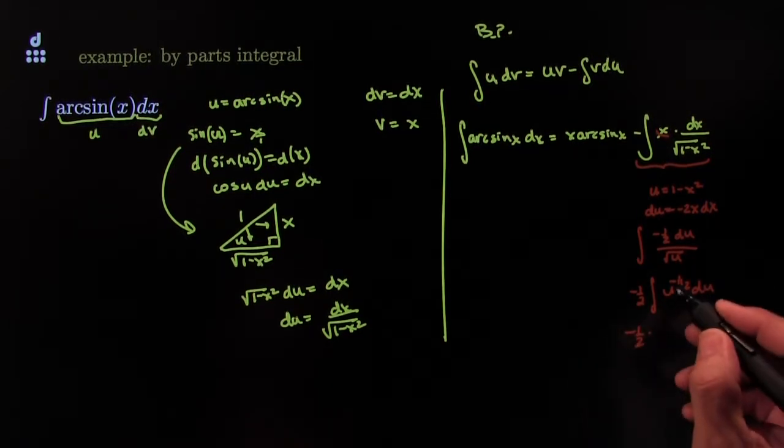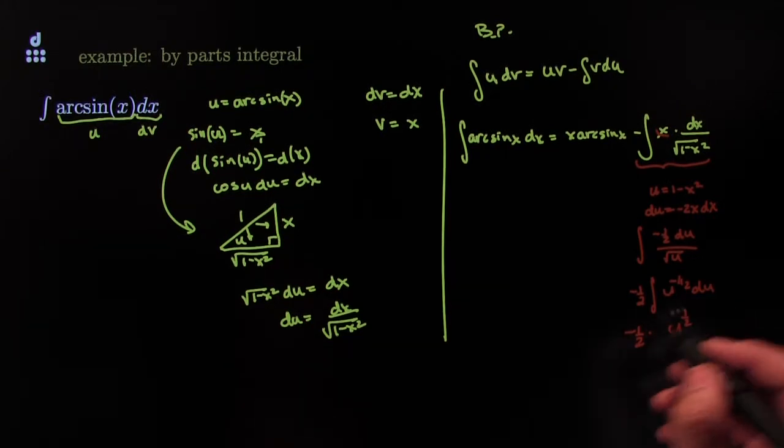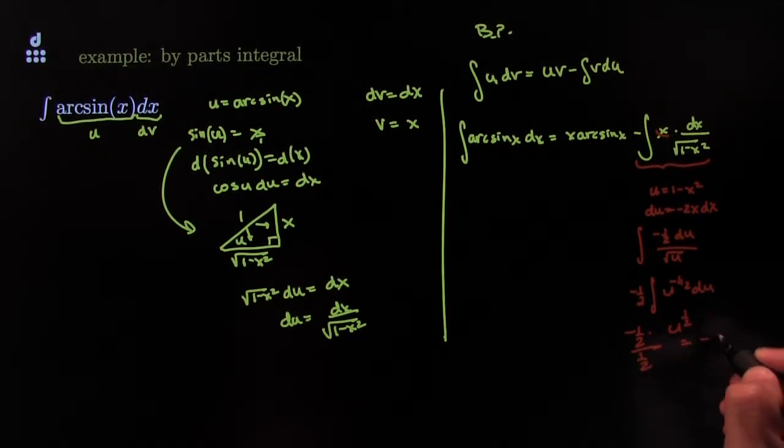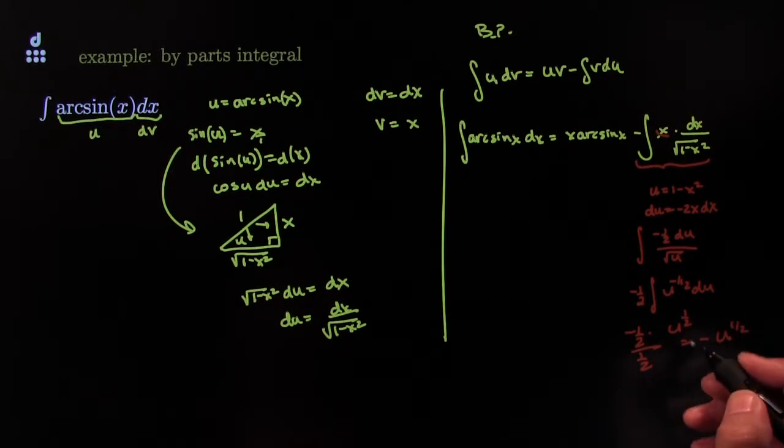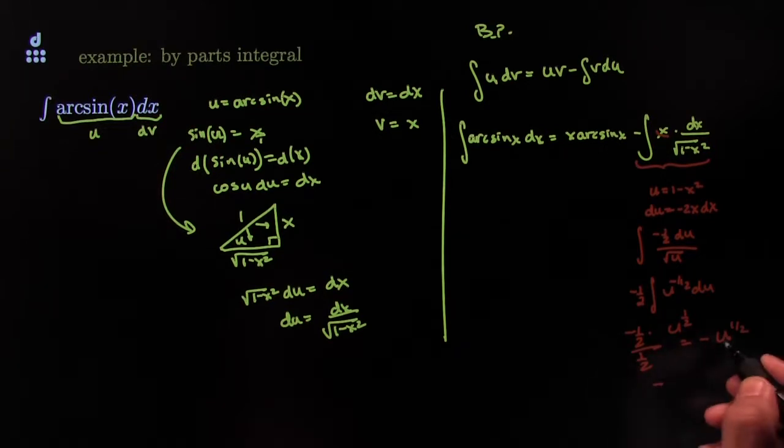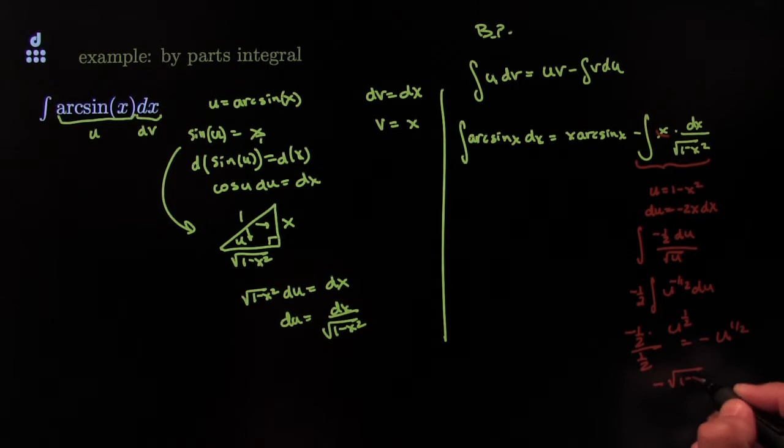which would be negative 1 half. Now, I would add 1 to the exponent. I would force it to be 1 half. Divide by the new exponent, which would be 1 half. All together, I'd have negative u to the 1 half. Or, said differently, I would have negative u, which is this one, to the 1 half, which would be the square root of 1 minus x squared.